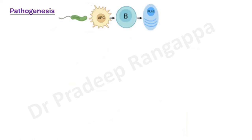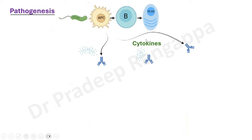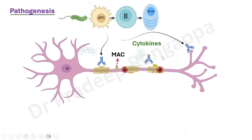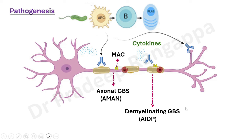This is just another pictorial representation of how different antibodies are directed against different components of the nerve sheath. In demyelinating, antibodies are against the myelin sheath; in axonal, against the axon; Miller-Fisher is against GQ1B.